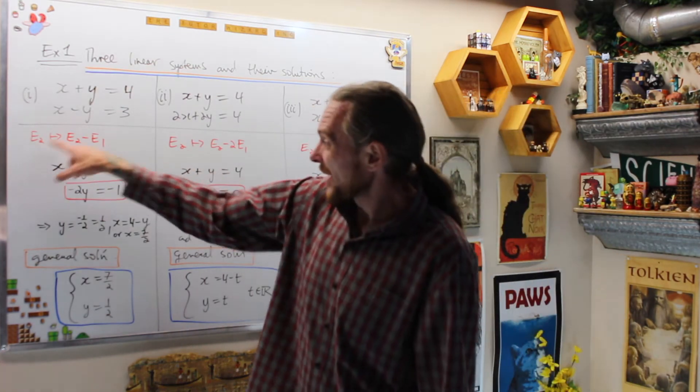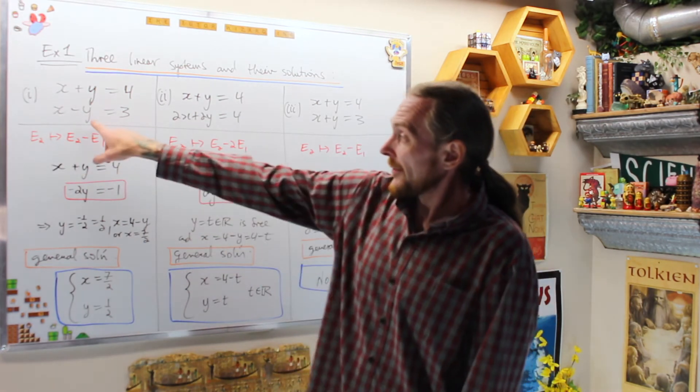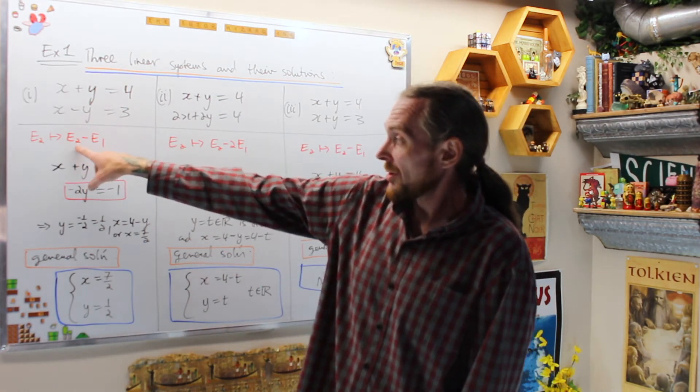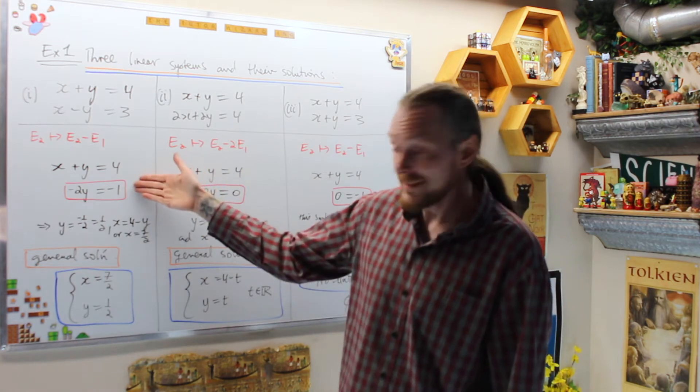What that looks like is I'm replacing in each case equation two. In the first case, I'm going to replace equation two with equation two minus equation one, and that's going to give us this system.